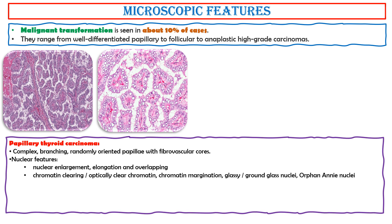Chromatin characteristics include chromatin clearing, optically clear chromatin, chromatin margination, glassy ground-glass nuclei, or Orphan Annie nuclei. Nuclear membrane irregularity includes irregular nuclear contour, nuclear grooves, and nuclear pseudo-inclusions.